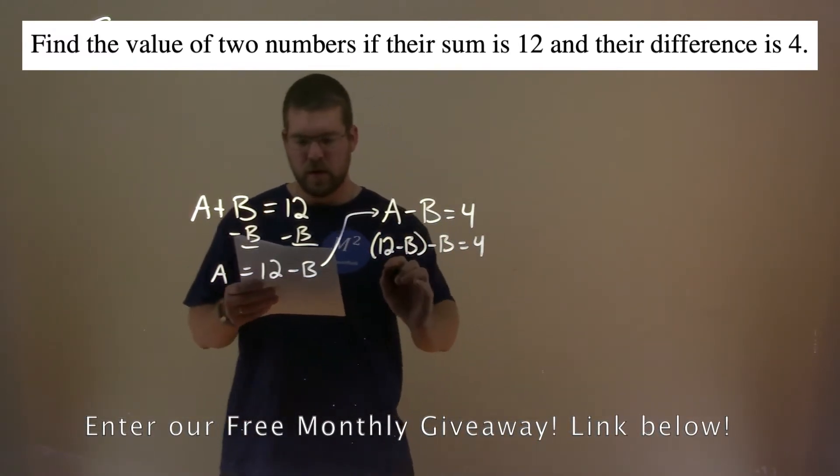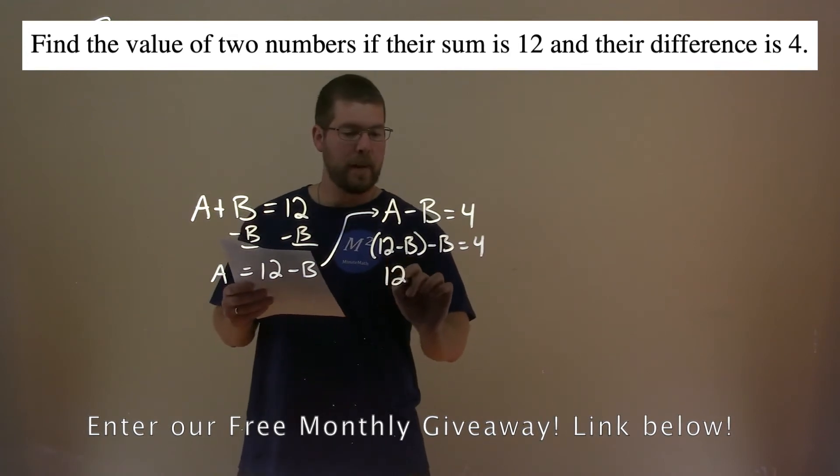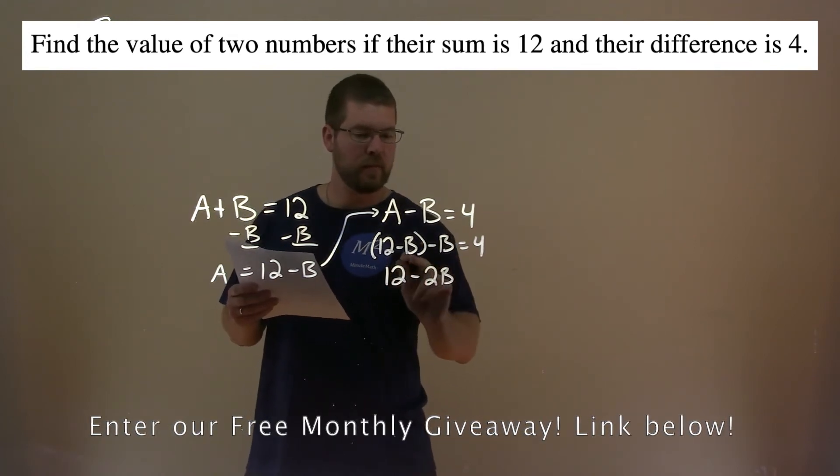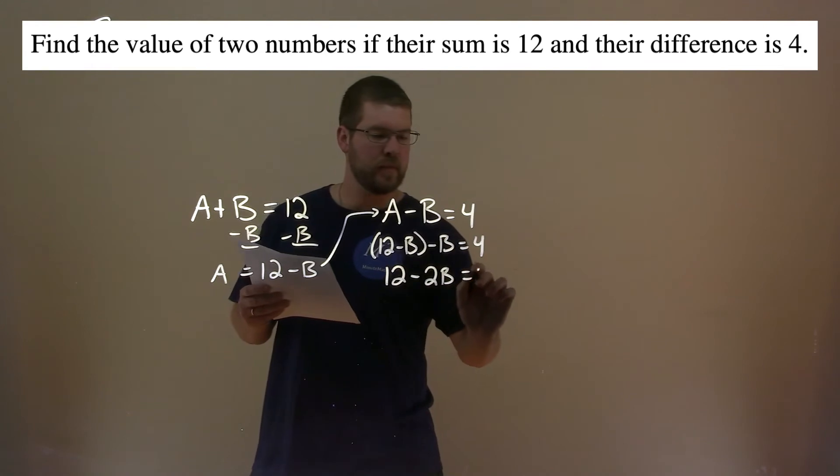Simplify that. So we have 12 minus 2B, right? Minus B minus B is minus 2B equals 4.